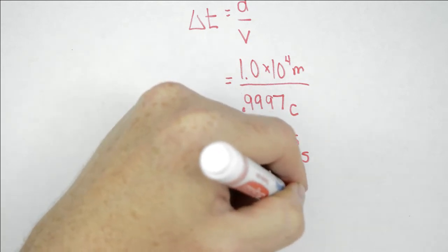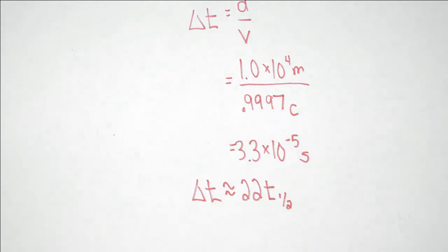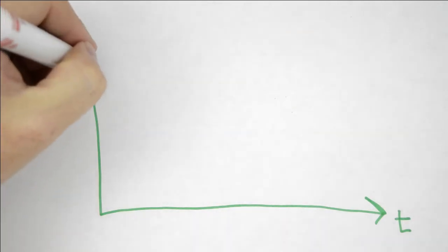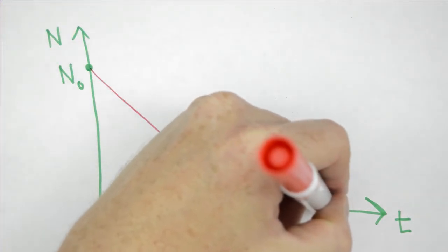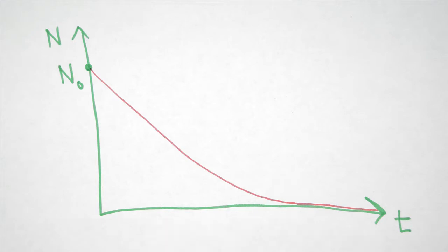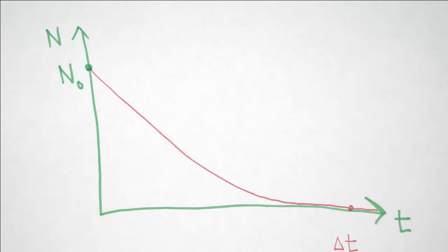This is approximately 22 half-lives. What this means is that if we consider the number of muons that we start with, they are going to decay to almost zero after 22 half-lives.